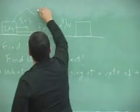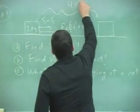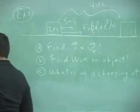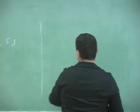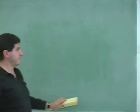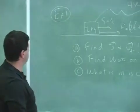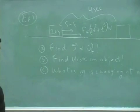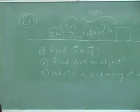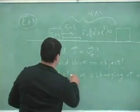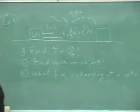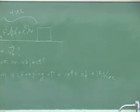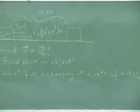Let's say the time is four seconds again. So find j and v, find work done on object. What if the m is changing at a rate of plus one kilogram per second? And then answer the same questions here.